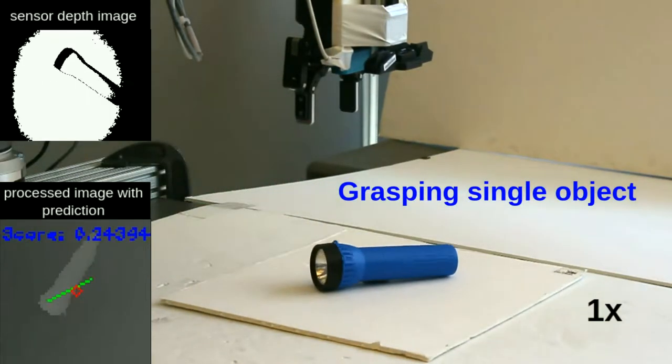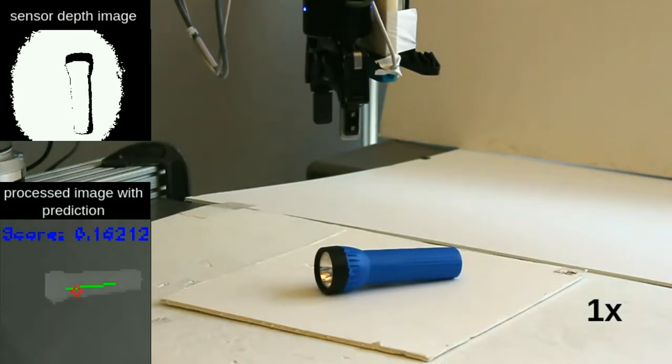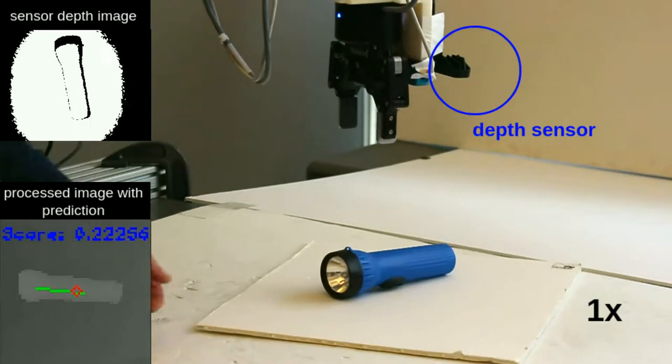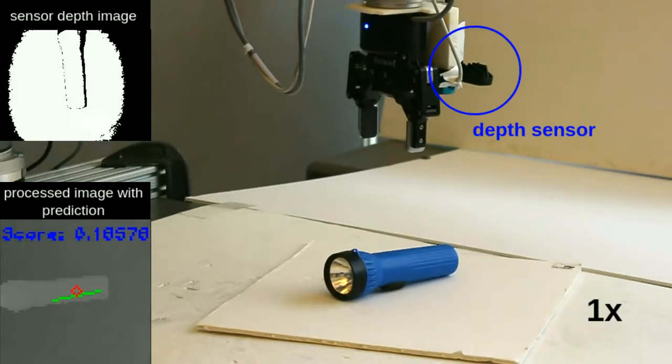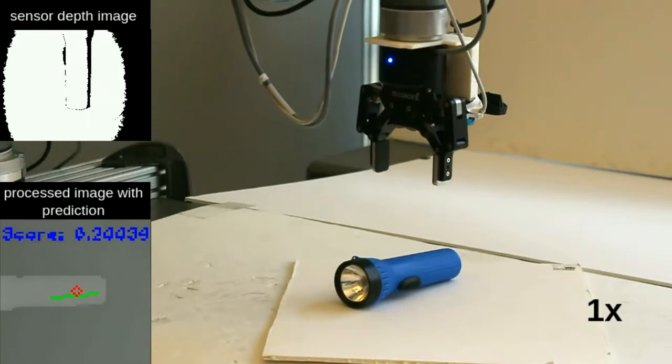Our controller uses a neural network to predict how to move in order to grasp. The network takes as input a depth image produced by a sensor mounted at the wrist. The nearest predicted good grasp is shown as a green line in the processed depth image.